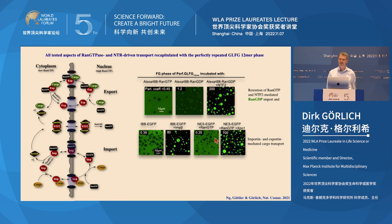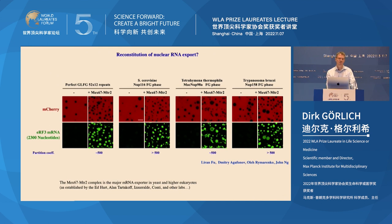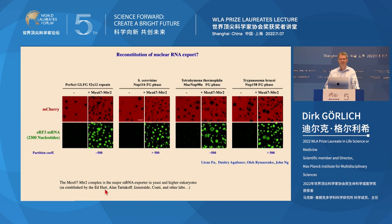We also reconstituted mRNA export using an mRNA encoding a translation termination factor, approximately two kilobases in length. The perfect GLFG phase excludes mCherry; adding the mRNA exporter from yeast — the Mex67/Mtr2 heterodimer, identified by the Hurt, Conti, and other labs as responsible for mRNA export across many organisms — accumulated the mRNA 500-fold within the phase. The perfectly repeated FG phase behaves very similarly to original FG phases from yeast, Tetrahymena, or trypanosomes.